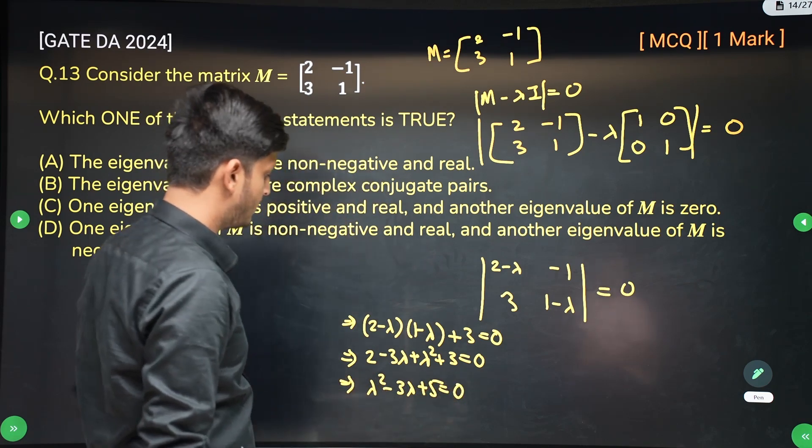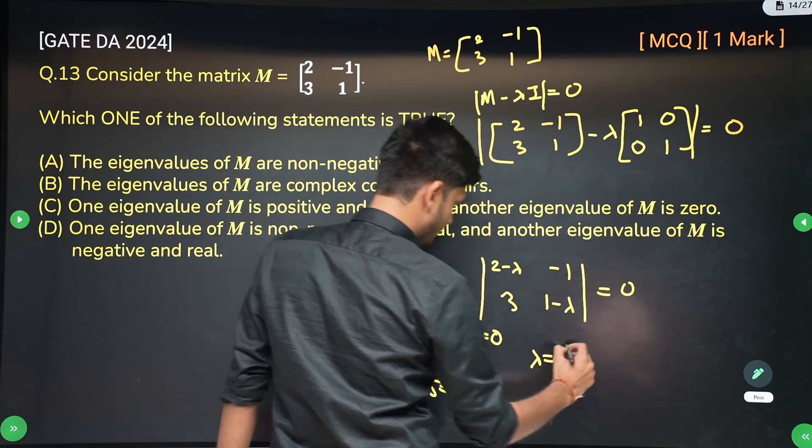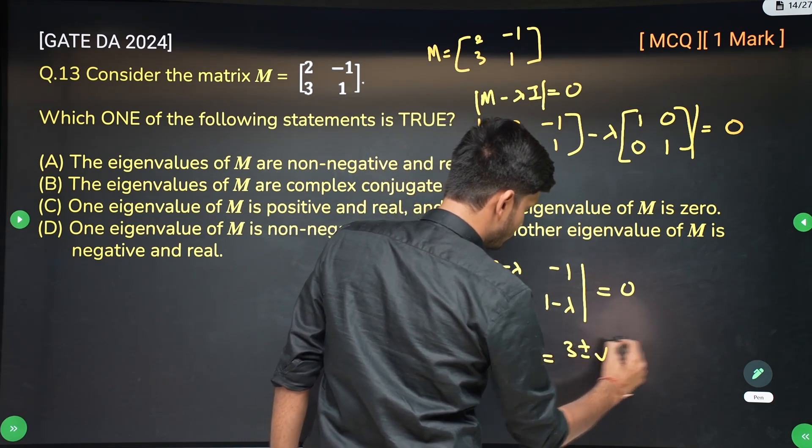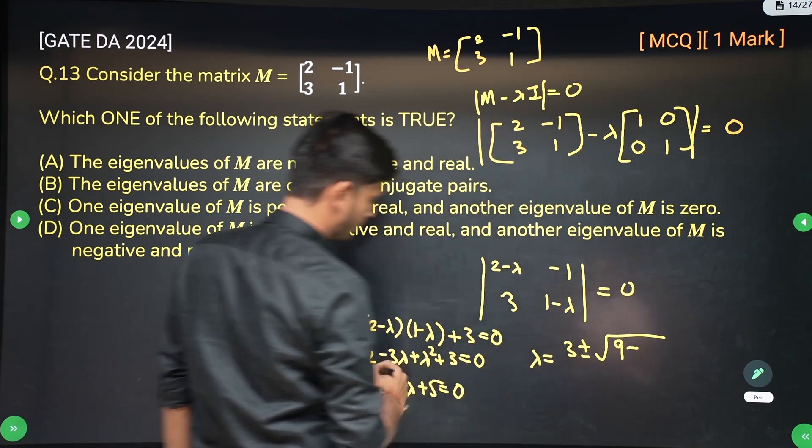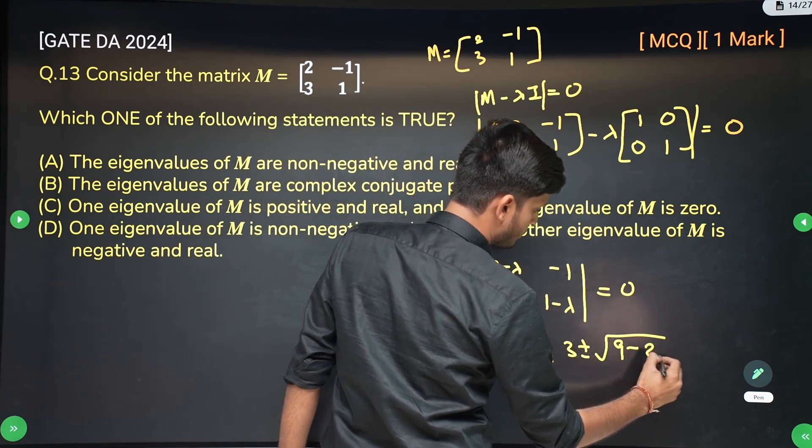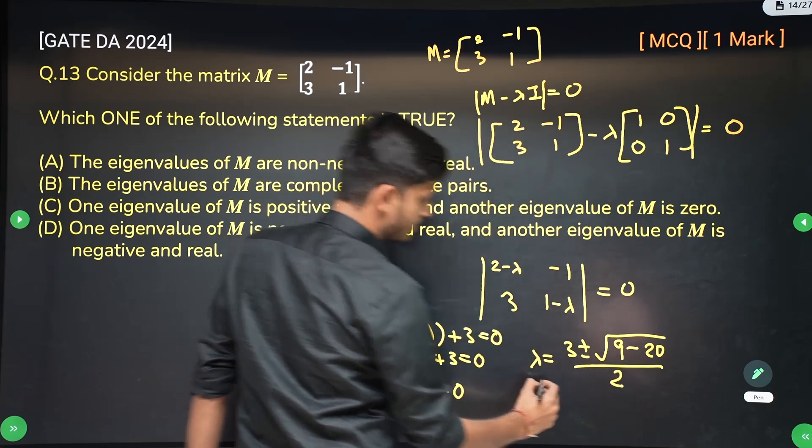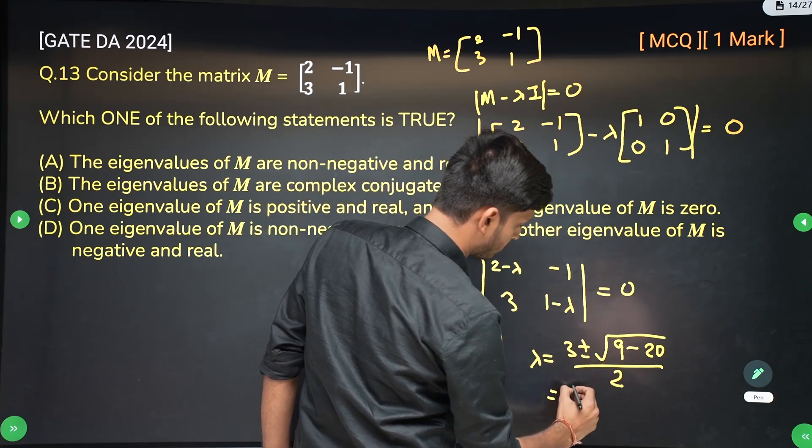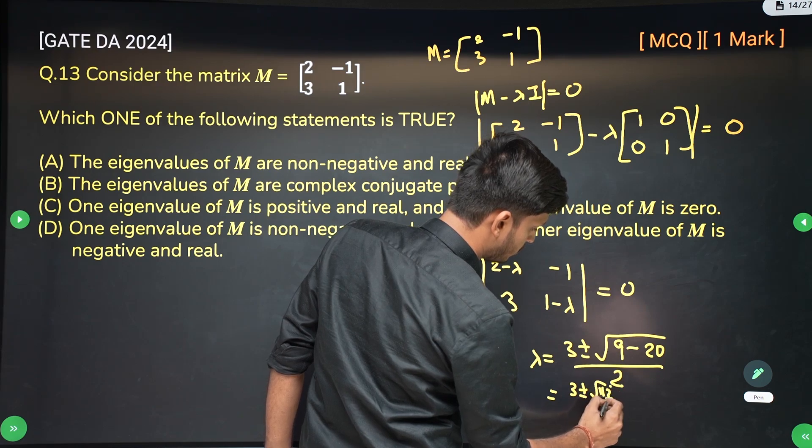Now you can apply Shri Dharacharya formula here. So lambda will become 3 plus minus square root of b square minus 4ac. So 9 minus 4 into 1 into 5 which is 20 upon 2a. 2a is 2. So this is nothing but minus 11. So it is 3 plus minus root 11 iota upon 2.